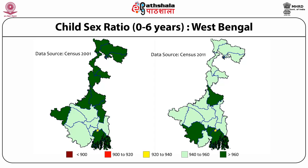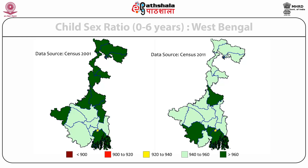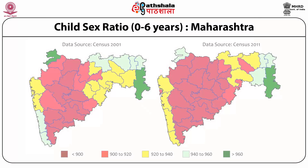In a state like Bengal, 950 becomes somewhat average by local standards, whereas in UP 950 would look very good. In Maharashtra, if you look at 2001 itself, you already see much red and dark red. The developed areas of Maharashtra are the western areas, yet even the backward areas like parts of Marathwada already had worse child sex ratios.